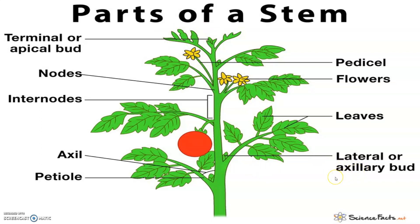The stem is generally green when young and later becomes woody and dark brown. The main functions of the stem are: spreading out branches, bearing leaves, flowers and fruits; conducting water and minerals for photosynthesis; some stems also perform storage of food, support, protection, and vegetative propagation.